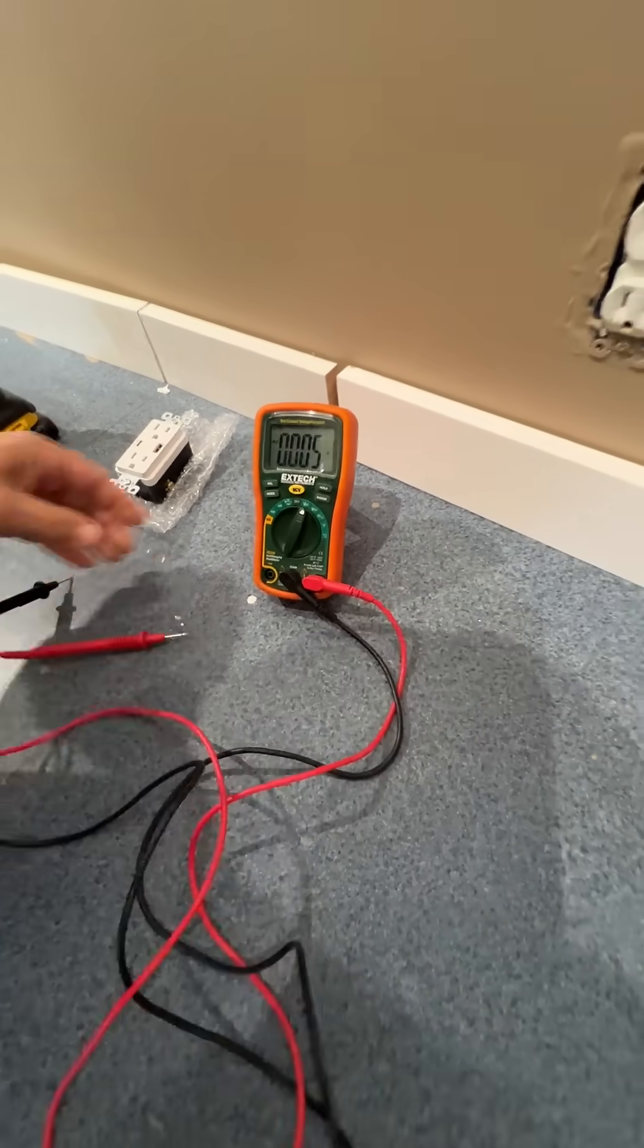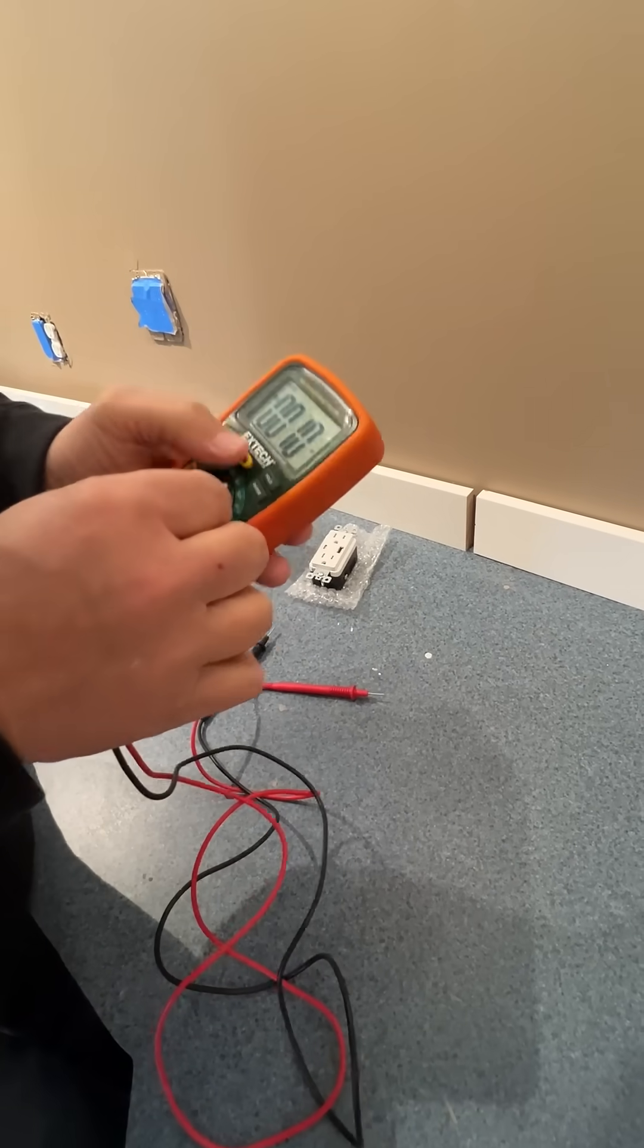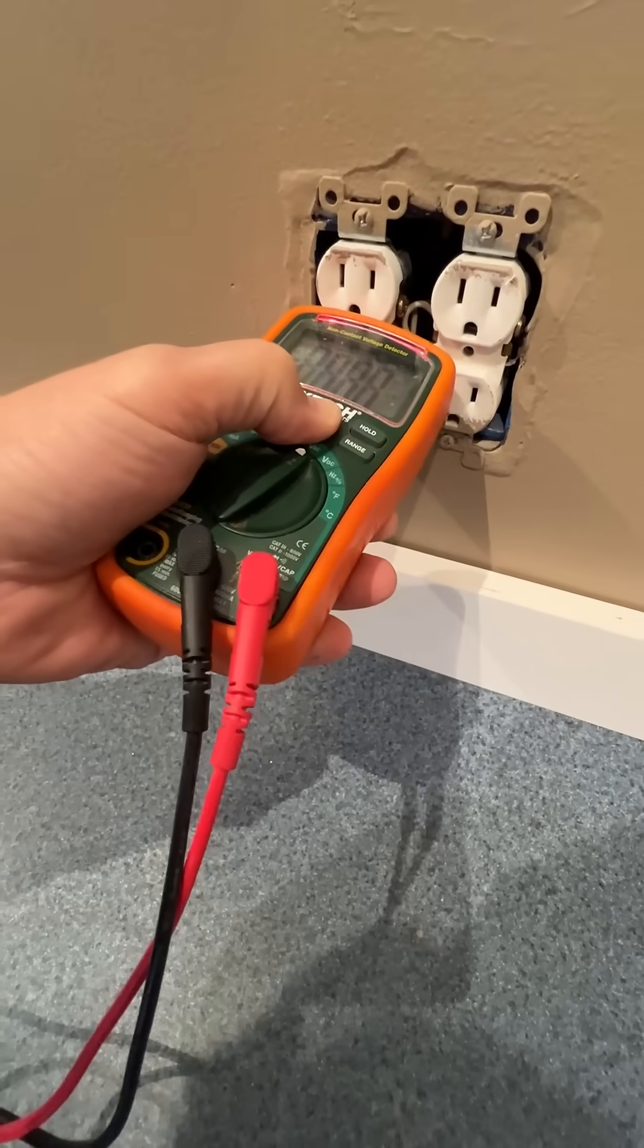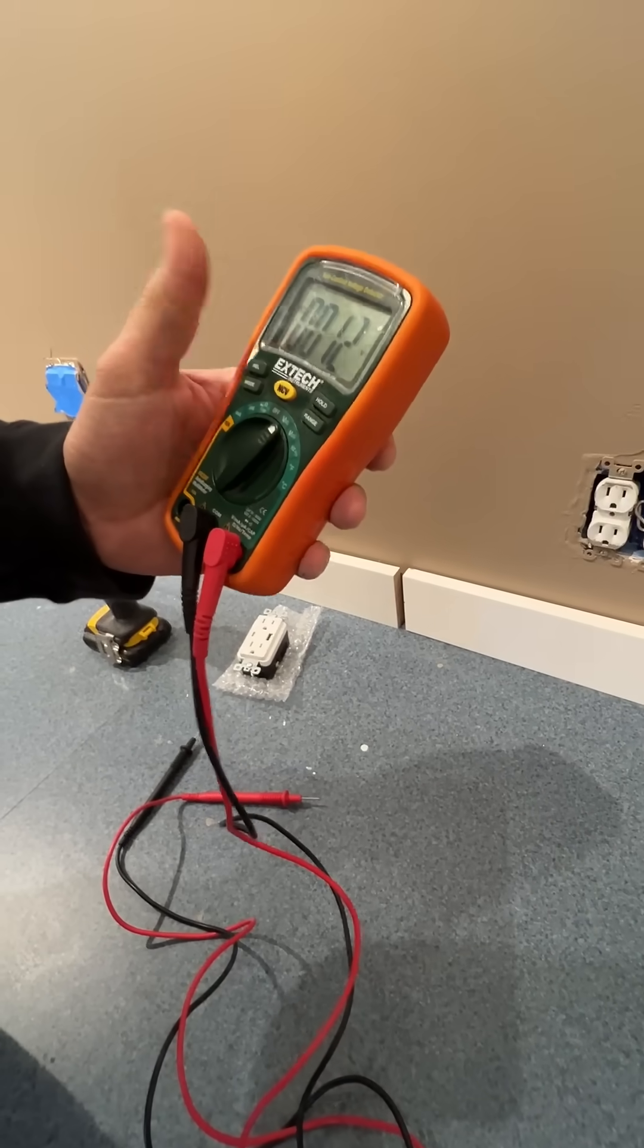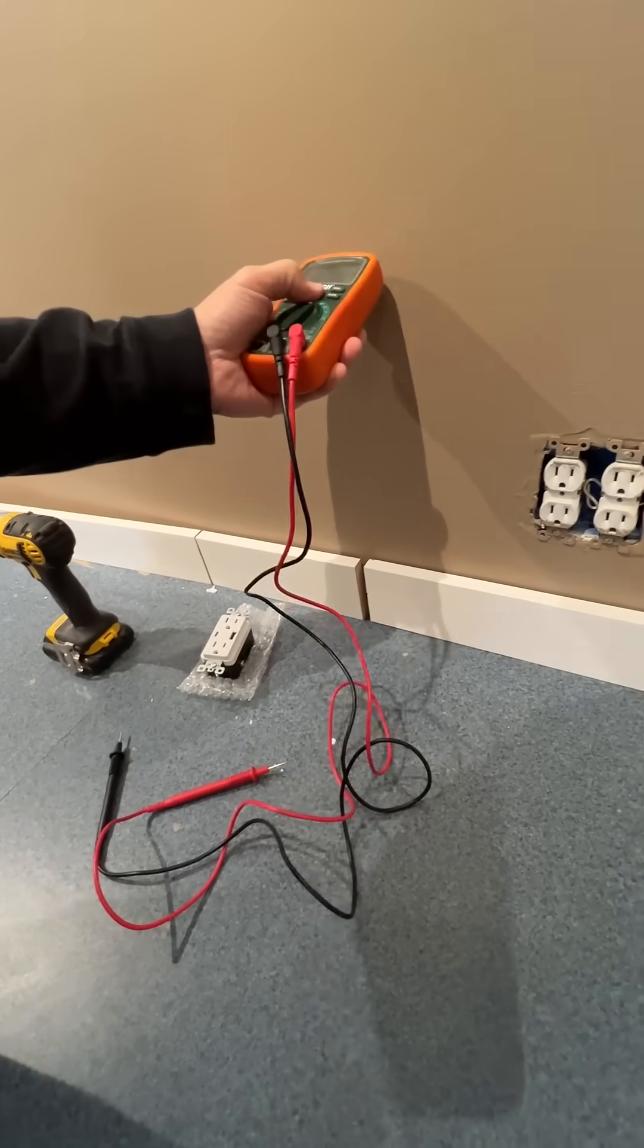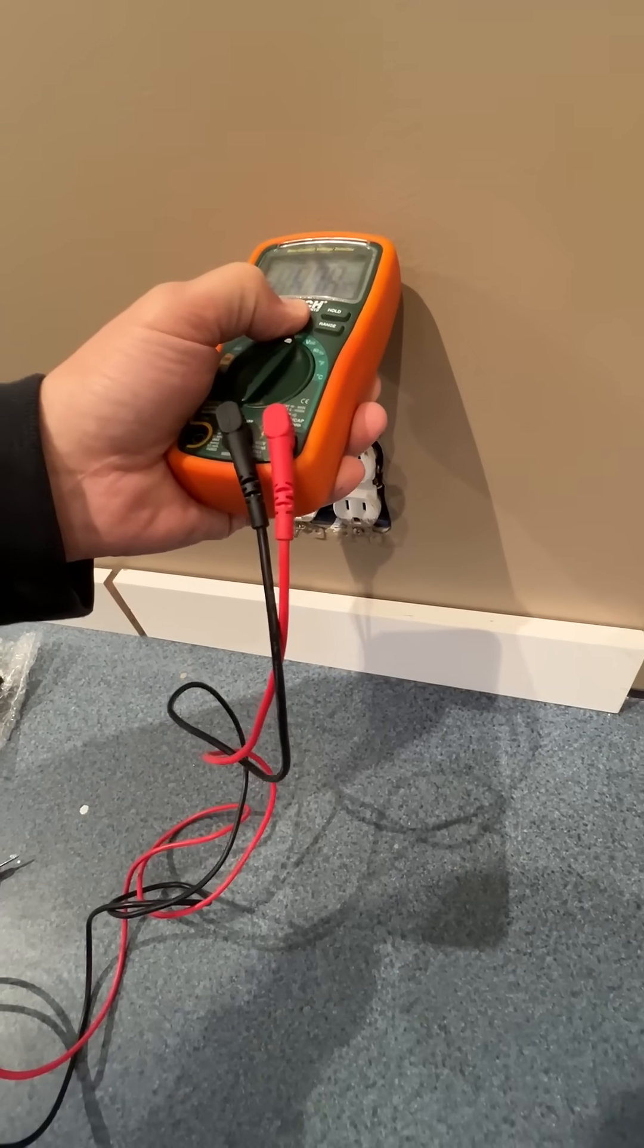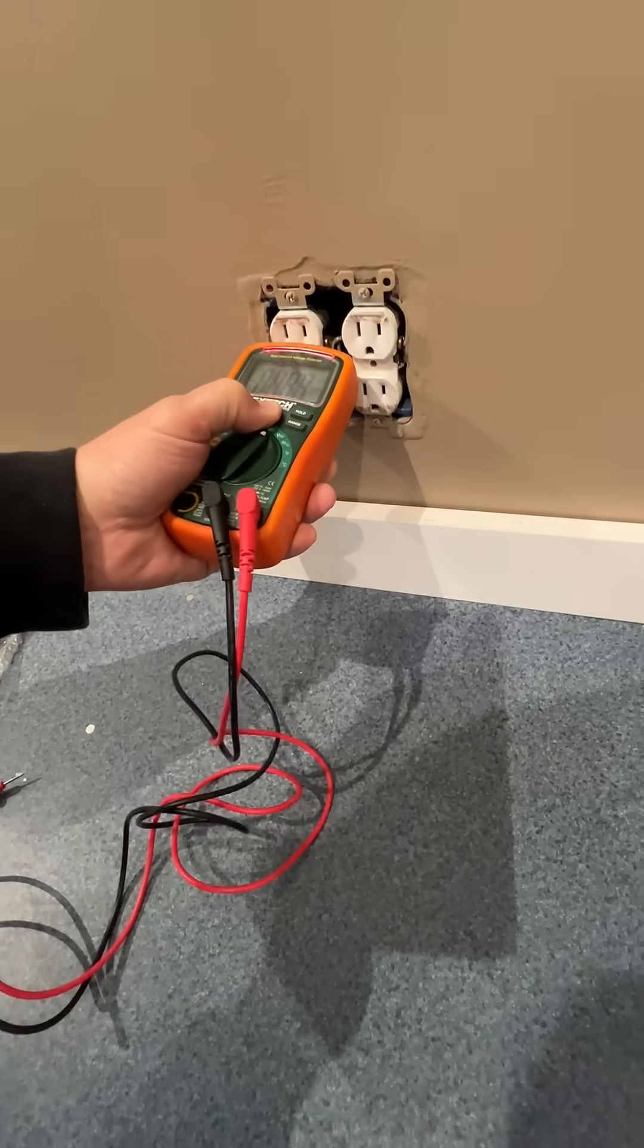Now, sometimes you don't want to mess with that. Sometimes you just want to go to a non-contact voltage detector, which I think is a beautiful thing. So if I'm trying to determine if there's wires in the wall, now these wires are going down. But if there was a wire in the wall, it would actually detect that voltage just like it does here.